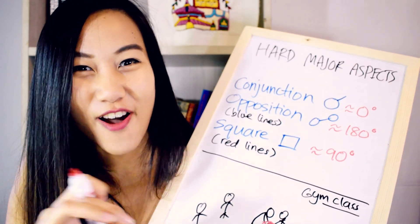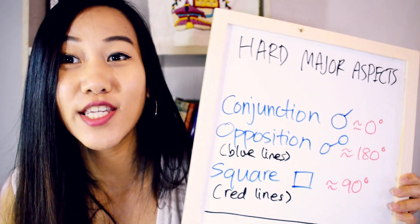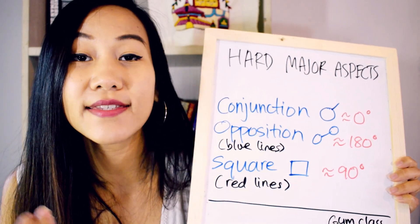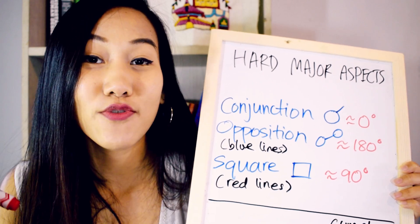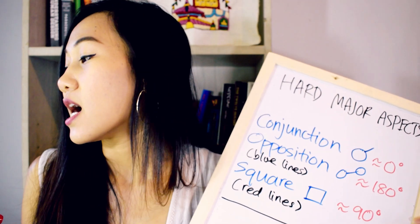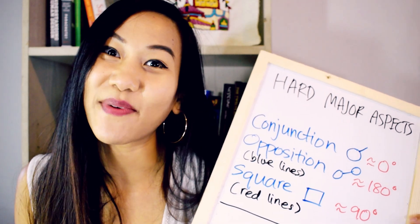So I'd like you to go back to your natal chart right now and go ahead, see if you have conjunctions, oppositions, and squares. Which planets and which houses are they in? That's three minutes for you today. I'm going to come back tomorrow and going to be talking about soft major aspects. Bye.